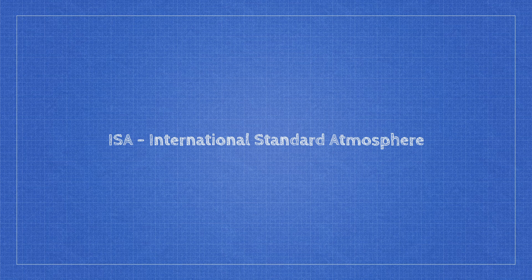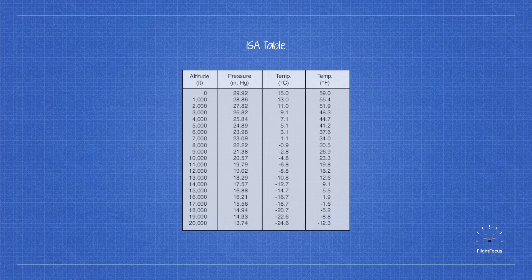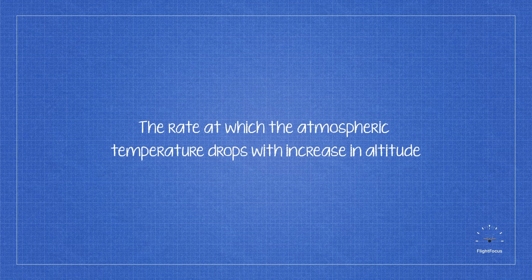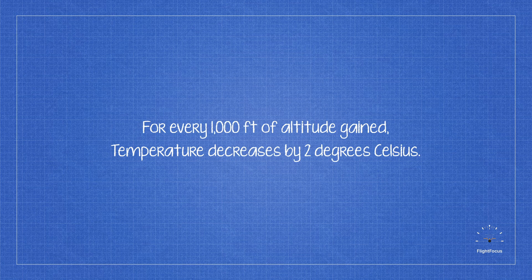The International Standard Atmosphere, ISA, is a model used for the standardization of aircraft instruments. It was established with tables of values over a range of altitudes to provide a common reference for temperature and pressure. This is where the term lapse rate becomes a topic, which simply means the rate at which the atmospheric temperature drops with an increase in altitude. In normal terms, for every 1,000 feet of altitude increase, the temperature drops by 2 degrees Celsius within the troposphere.